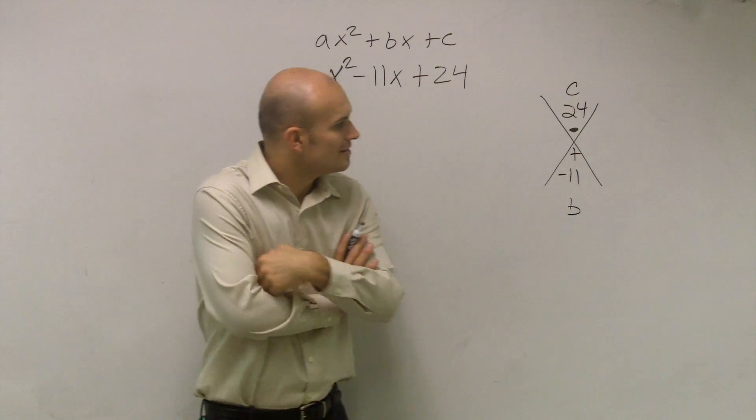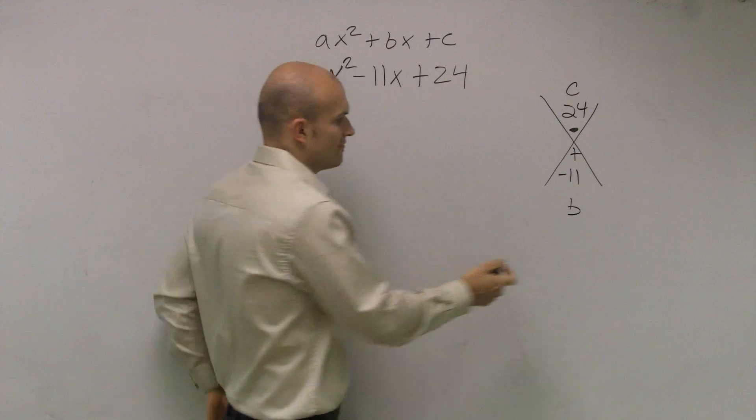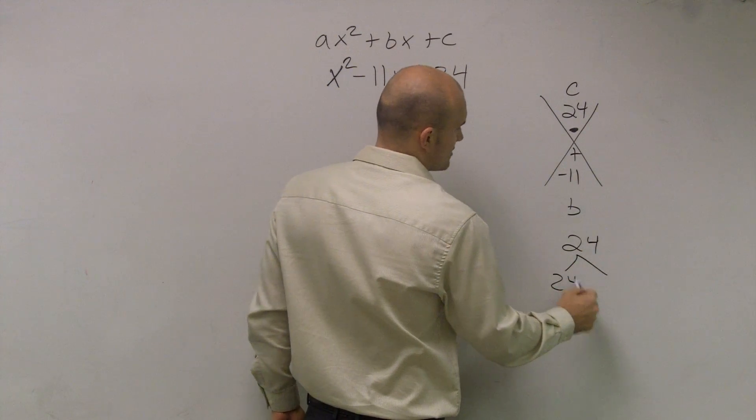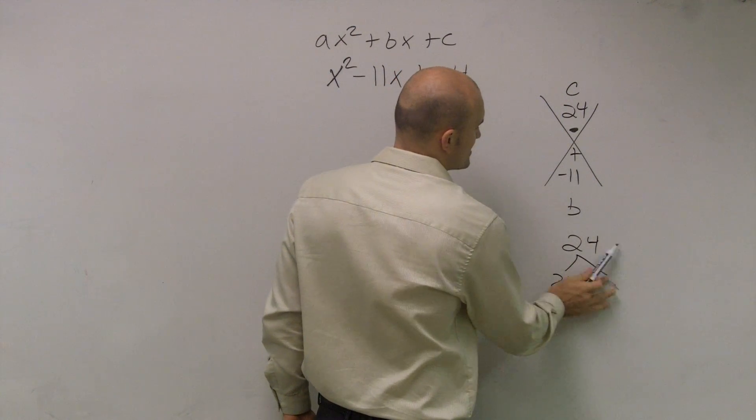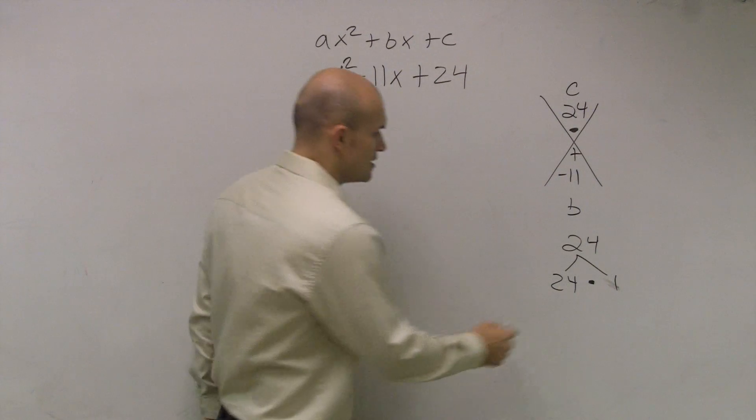So we have 24 times plus negative 11. So what I'm going to do is I'm going to write out the factors, and what I was explaining was, just remember the factors are going to be your two numbers that are going to multiply to give you 24. Now, 24 times 1 works.